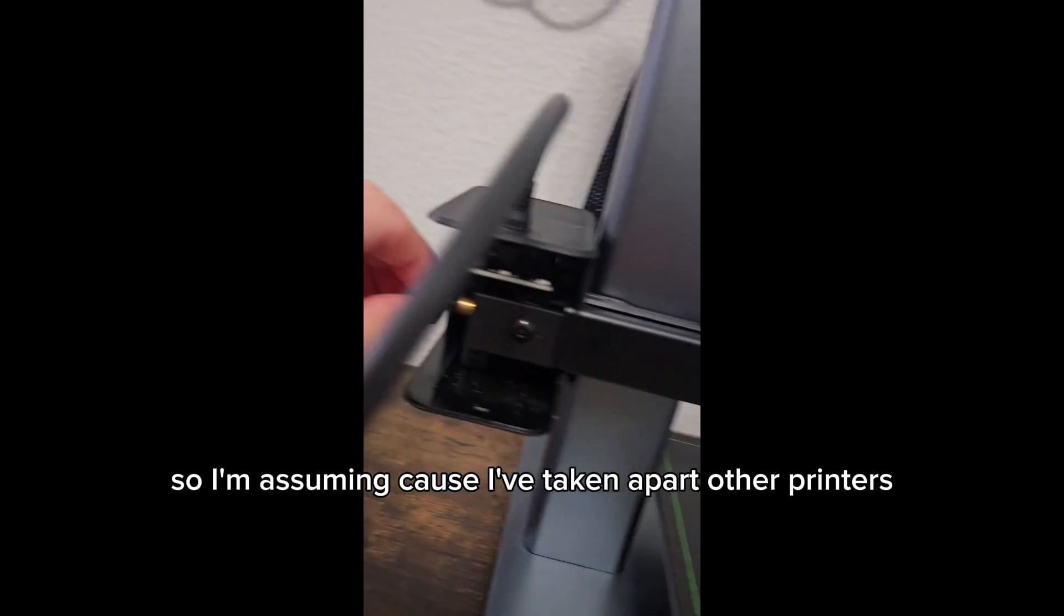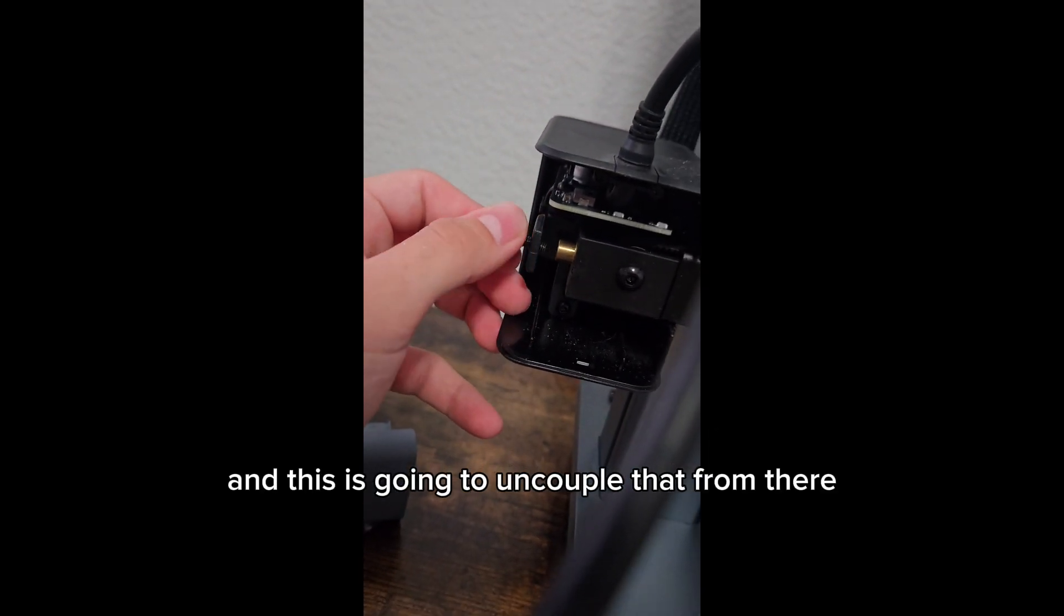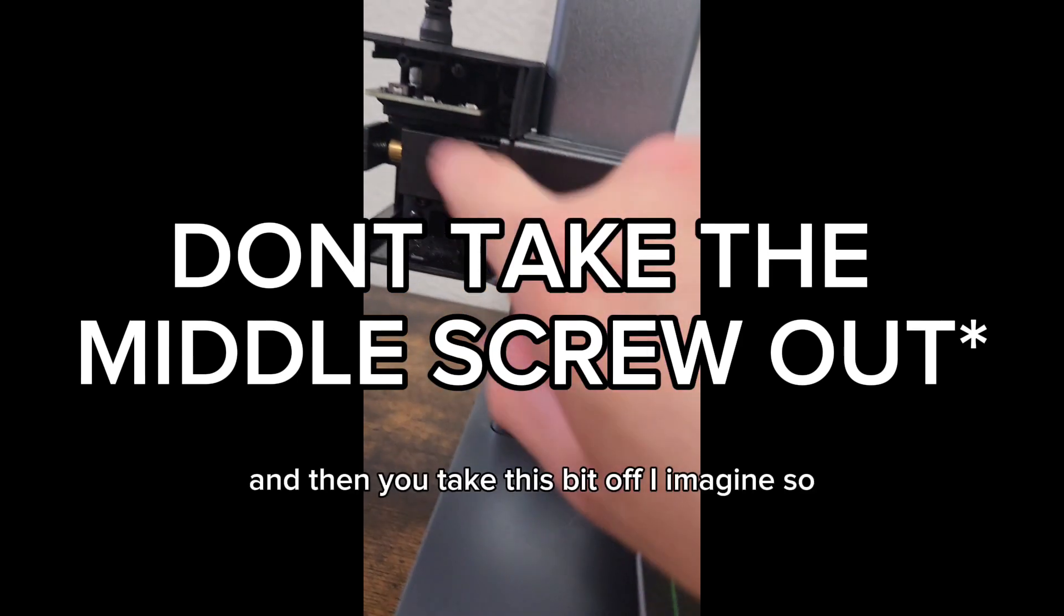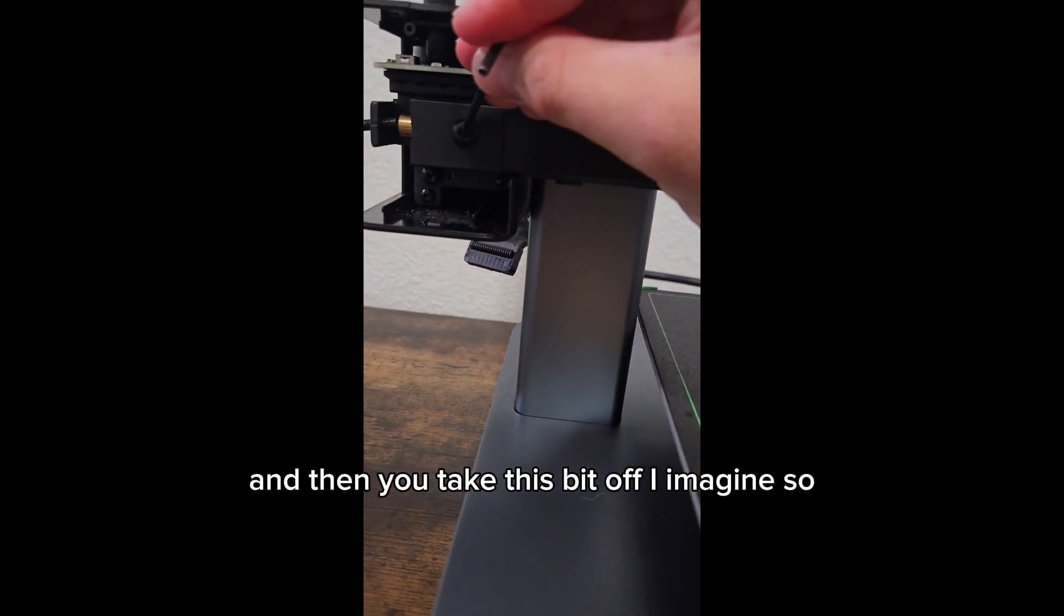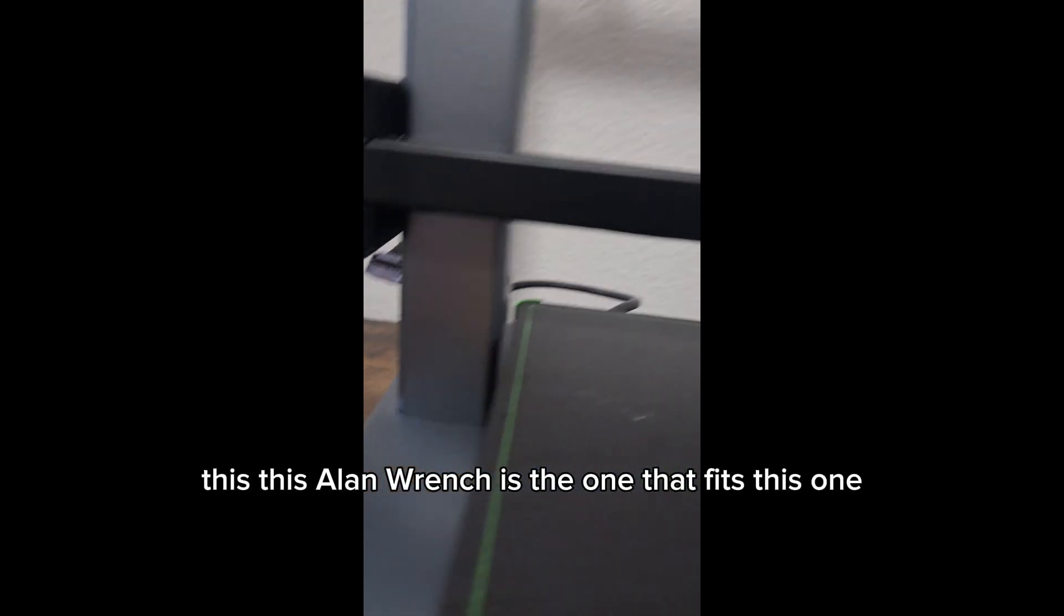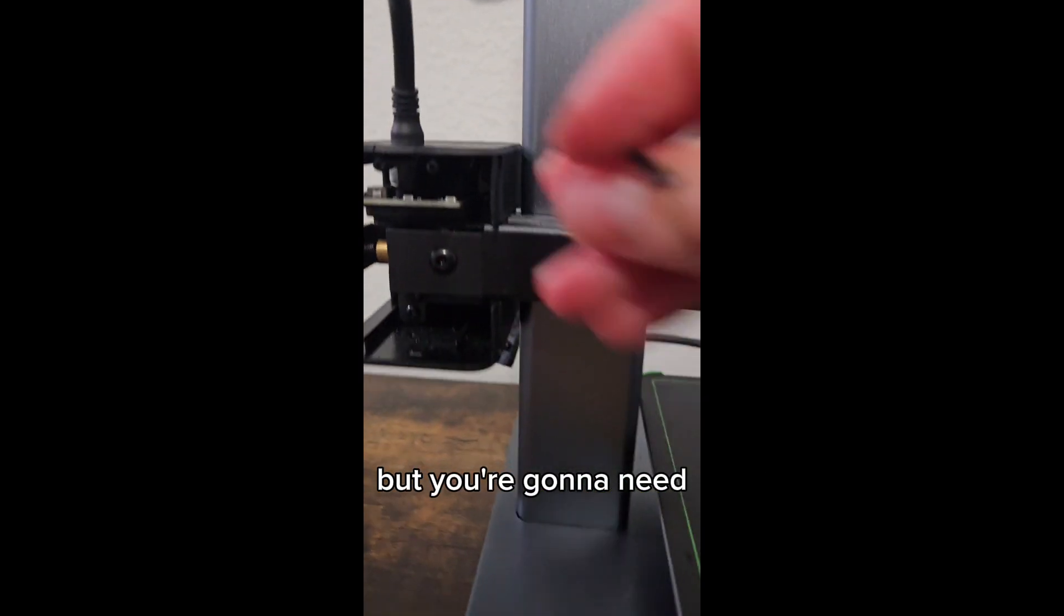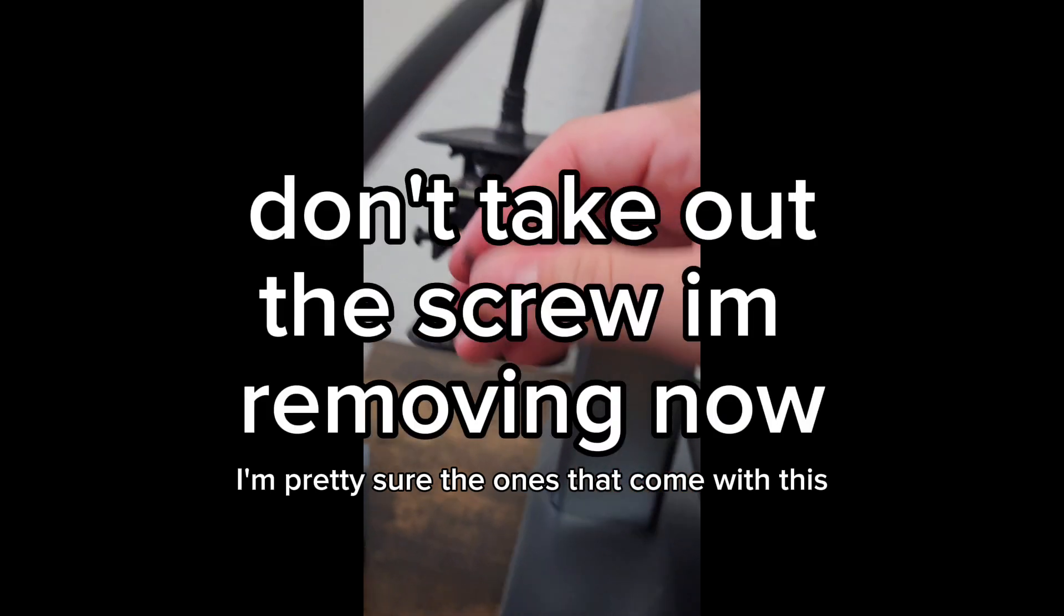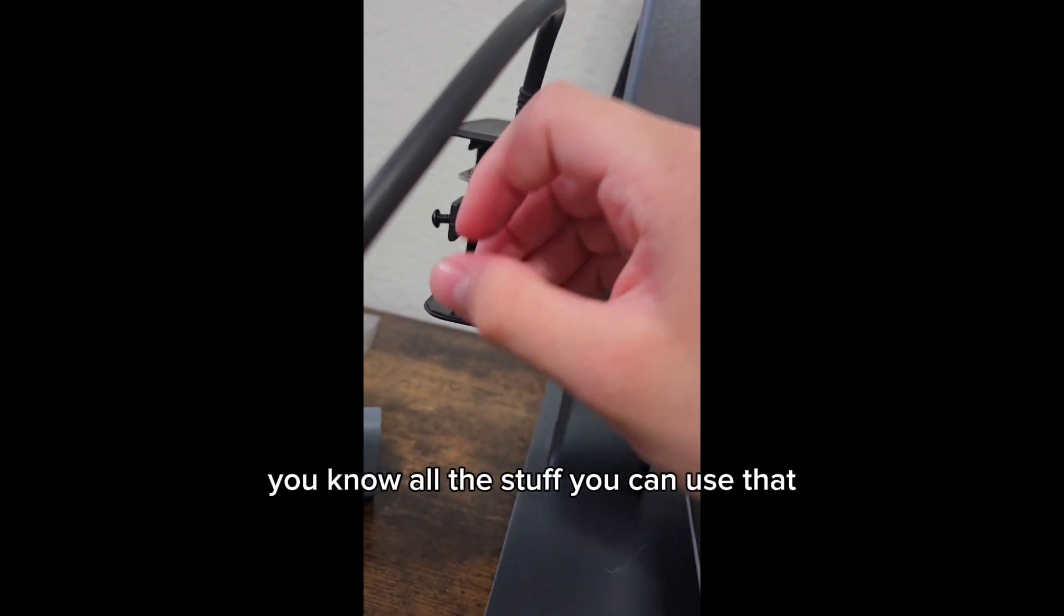So I'm assuming, because I've taken apart other printers, you can take this out, and this is going to uncouple that from there, and so that is a lot looser, and then you take this bit off, I imagine. So this Allen wrench is the one that fits this one. The ones that were in here was with a smaller one, I don't know the exact dimensions, but you're going to need a whole set of Allen wrenches. I'm pretty sure the ones that come with this thing comes in a little box of all the stuff, you can use that.